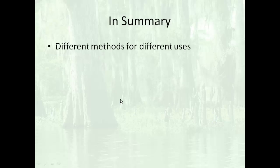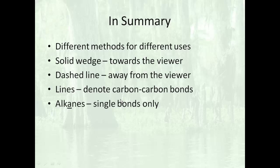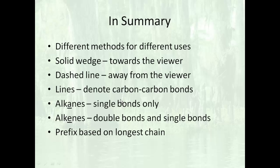In summary, different methods for different uses, depending on what you want your user to walk away with, that's the method that you're going to use. The solid wedge means that it's coming toward the user. The dashed line means it's going away from the viewer. Lines, if you have the lines, if you're using the skeletal structure method, it denotes a carbon-carbon bond. If it's other than carbon, it's going to be listed there, what the atom is. If there is no line, then you're assuming it's hydrogen. Alkanes, single bonds only, but if it has double bonds, we call it alkenes, double bonds, and may have single bonds in there. Prefix is based on the longest chain.